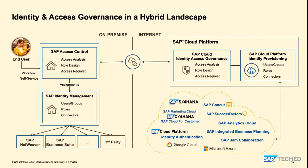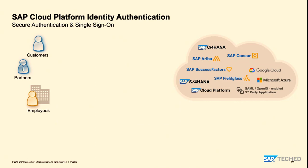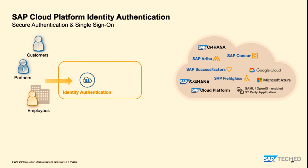With the stage ready — users distributed and authorizations provided — users should access the applications, and here we have identity authentication service. Different types of users use various cloud applications, and we have a central service offered as part of the SAP IAM portfolio for exactly this purpose. Identity authentication service allows different types of users to authenticate and access all these applications using different protocols: SAML or OpenID Connect. You can use these protocols to connect existing SAP solutions but also third-party solutions that support these protocols.